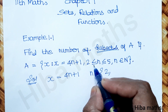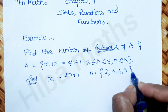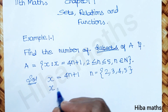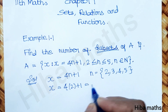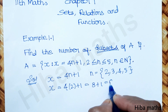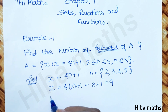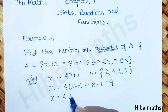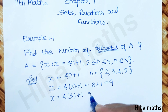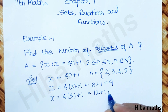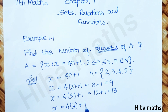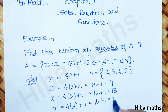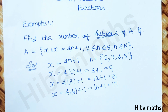n = 2: x = 4×2 + 1 = 8 + 1 = 9. Next, n = 3: x = 4×3 + 1 = 12 + 1 = 13. Next, n = 4: x = 4×4 + 1 = 16 + 1 = 17.